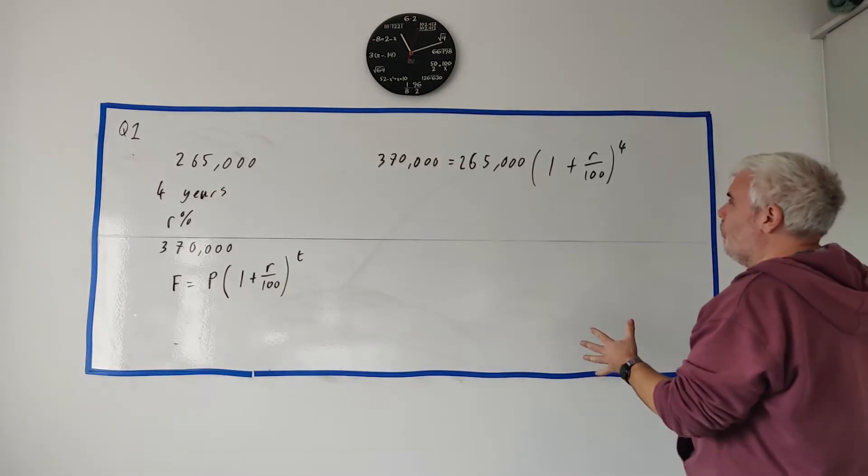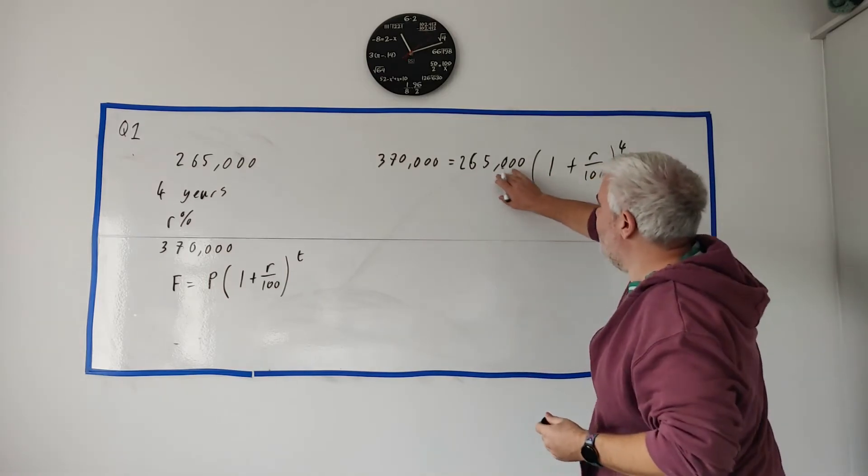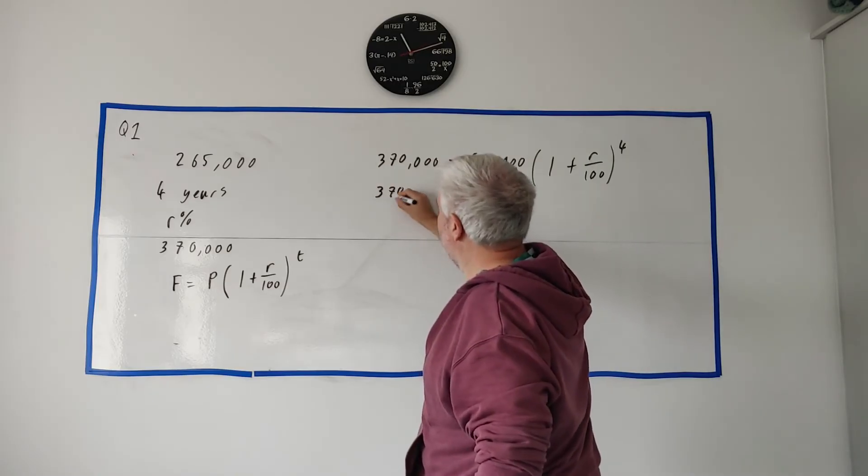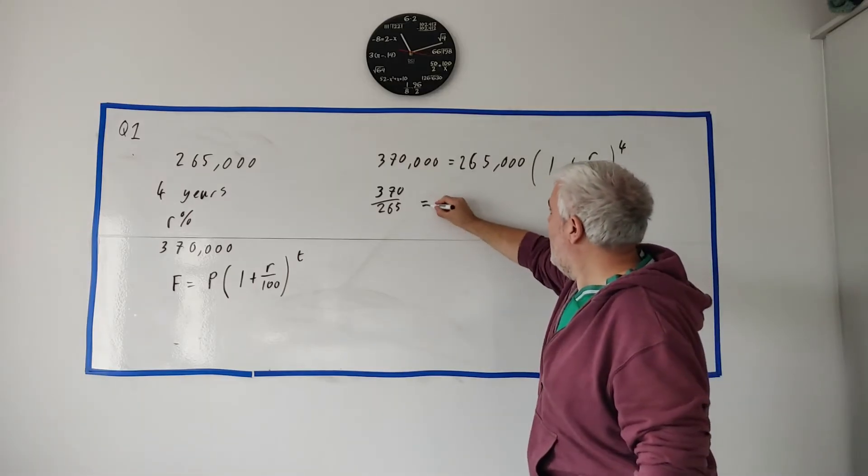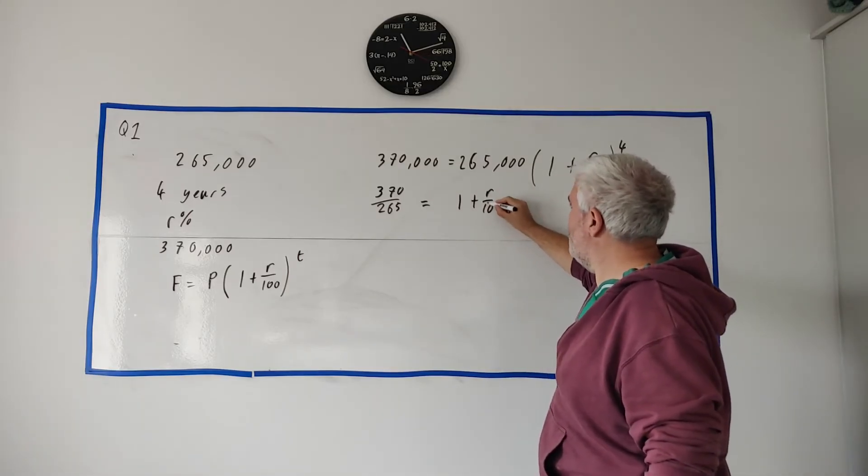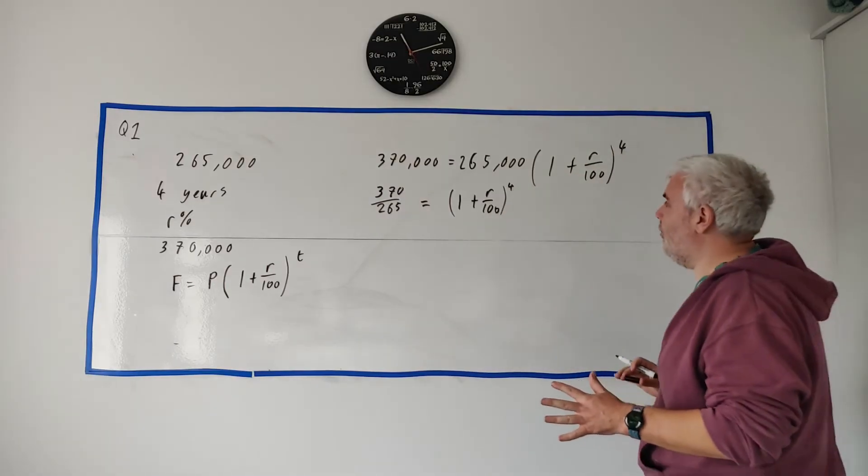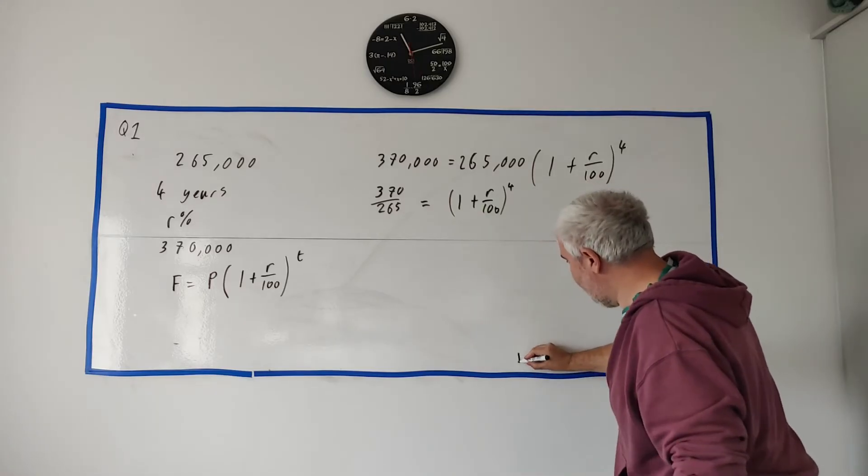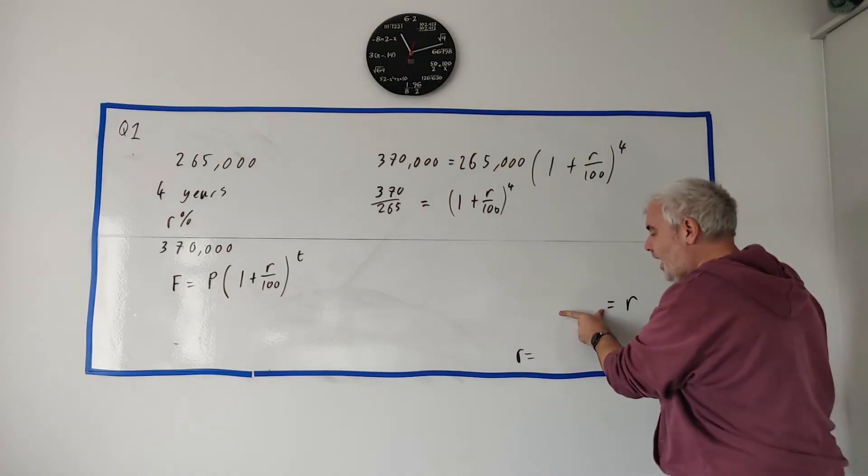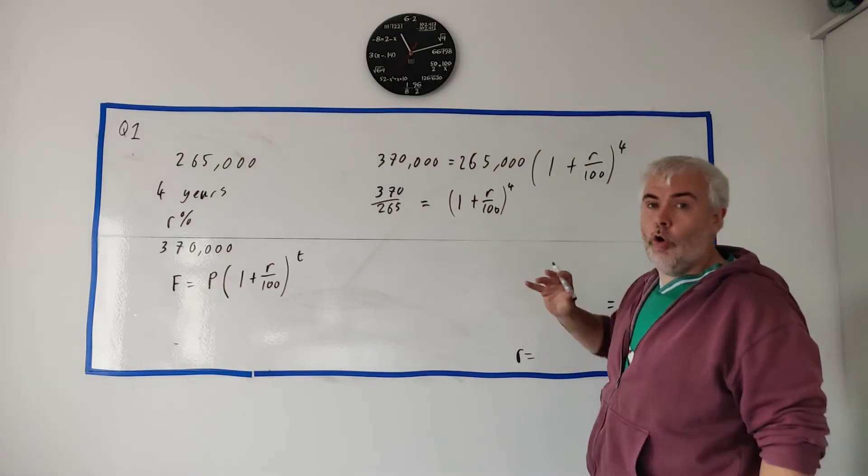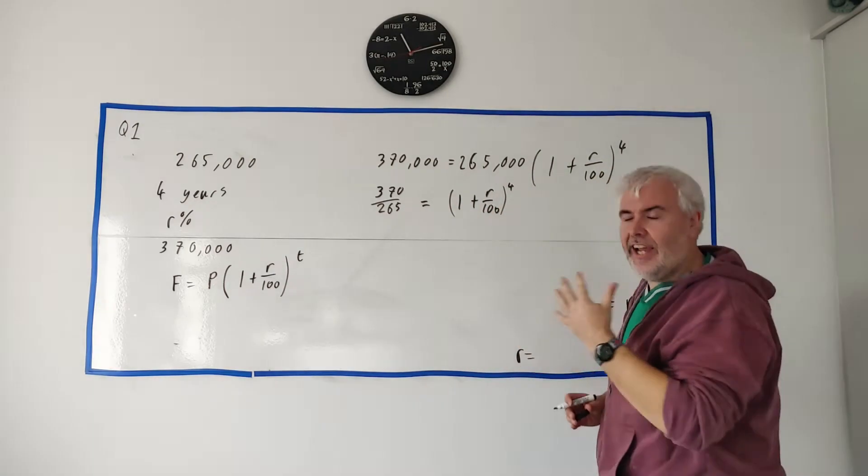There's only one thing we don't know here and that's R. So we can go ahead and rearrange this equation to solve for R. The first thing I would get rid of is this multiply here. Divide everything by this number. So we get 370 divided by 265, all the zeros will cancel on both sides, and that will be equal to 1 plus R over 100 to the power of 4. Next thing to get rid of, the 4 acts on everything. Let's get rid of that.